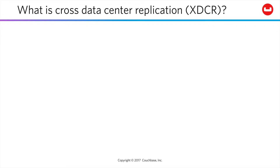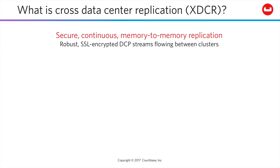Cross-data center replication is another major factor ensuring high availability and disaster recovery. XDCR is secure, continuous, memory-to-memory replication set up as pipelines between two buckets in different clusters. These pipelines are SSL-encrypted and implemented with DCP — the database change protocol introduced earlier in this course.